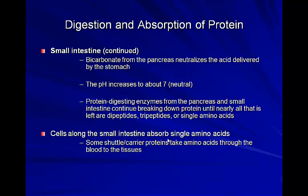Once broken down to single amino acids and small peptides, they are small enough to be shuttled across the small intestine and carried to the tissues. Enzymes like pepsin and trypsin are released by the pancreas to help digest the protein. The bulk of final protein breakdown and absorption of amino acids through the blood to the tissues occurs in the small intestine.